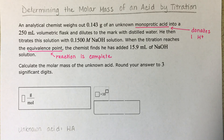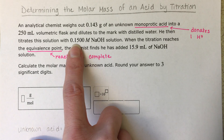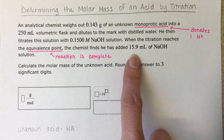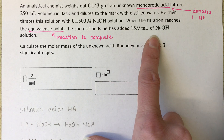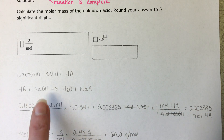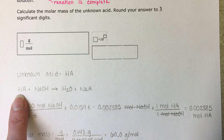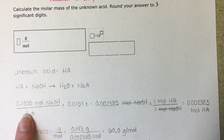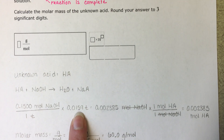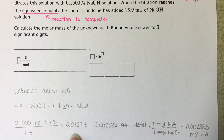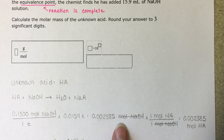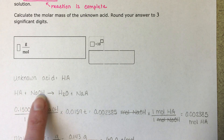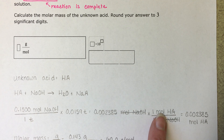What we do know is that we have 0.150 molar sodium hydroxide, and we used 15.9 milliliters of it. We'd like to know how many moles of sodium hydroxide that represents, because that will tell us how many moles of unknown acid we had initially before the reaction started. So we take the molarity of the sodium hydroxide and multiply it by the volume used in liters to get the number of moles of sodium hydroxide.